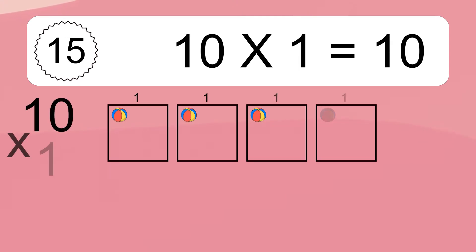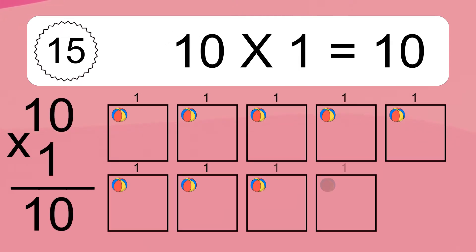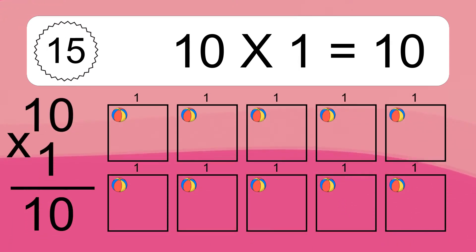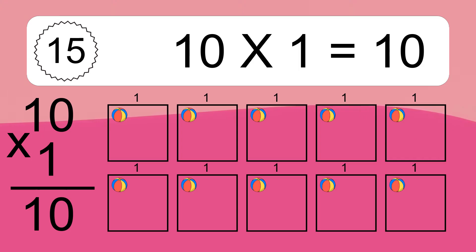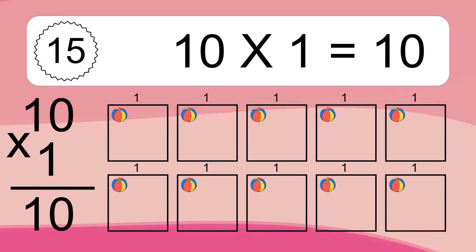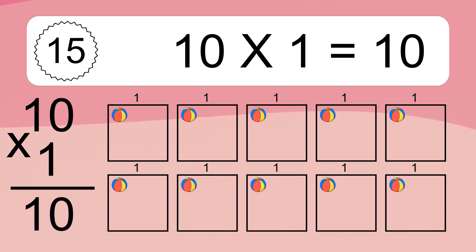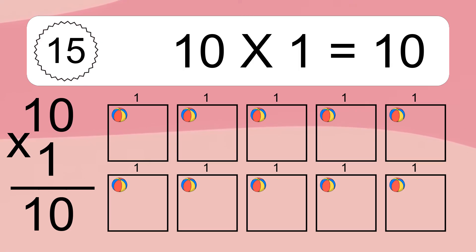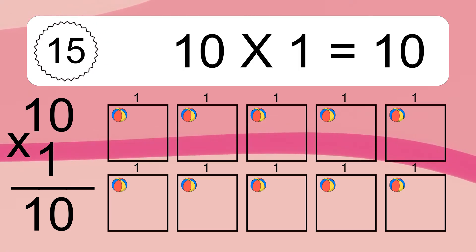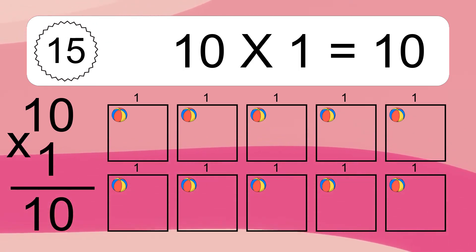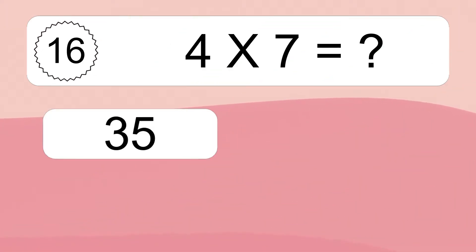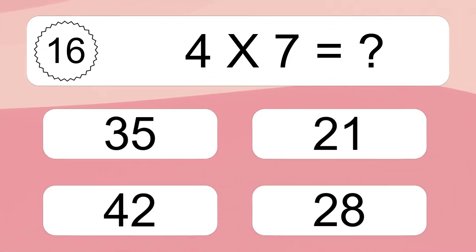Ten times one equals what? Ten times one equals ten. We have ten boxes, and each box has one colorful ball inside. If you count all the balls in all the boxes together, you will have ten times one balls. This equals ten balls.